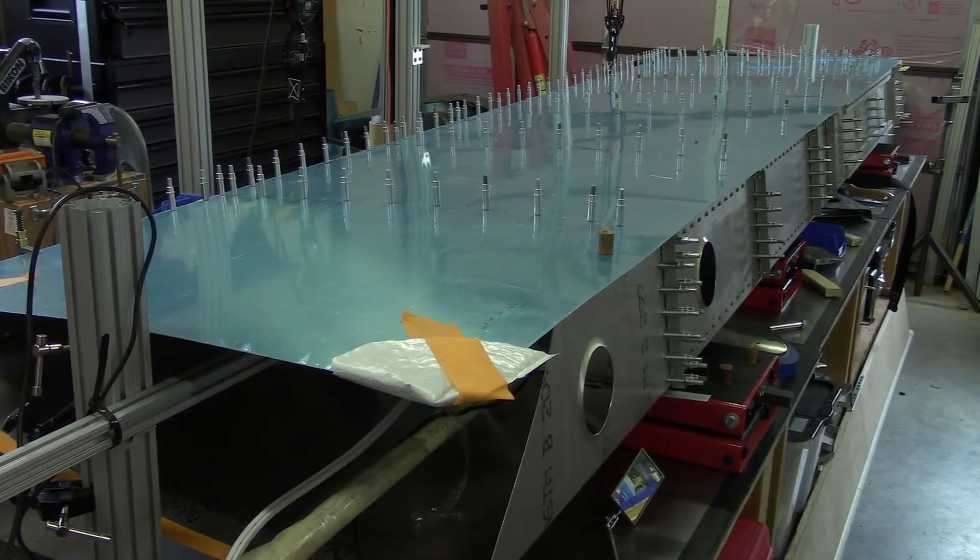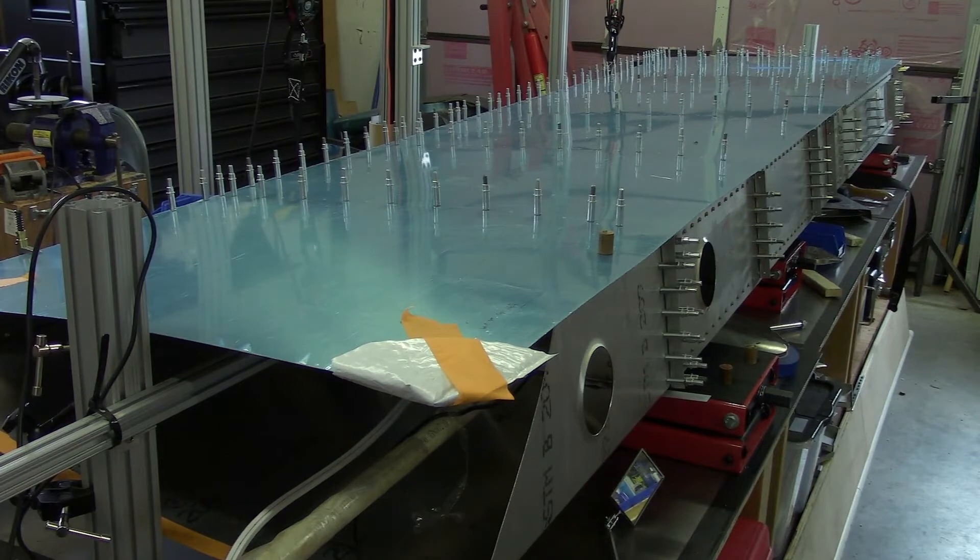This is documentation for attaching the bottom skin to the wing of my Zenith 650. I'm mainly doing this for my own reference so that when I get ready to do the other wing, I'll have something I can look back on and refresh my memory on how I did everything the first time.